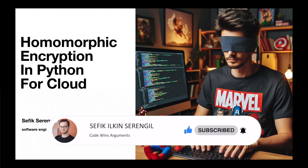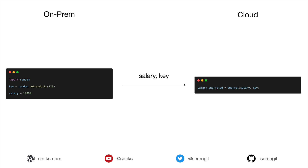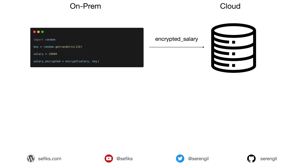Suppose that you need to store some sensitive data such as salary information to the database in cloud. Normally, suppose that my salary is 10k. I can send my salary to the cloud environment with a key — in that way I'm able to encrypt this salary information with a symmetric key encryption algorithm. But in this design, my key can be stolen because I am sending it to the cloud environment as plaintext. Alternatively, I can encrypt my salary information on-prem, so I'm not sending my private key to the cloud environment, just sending the encrypted salary. This is very secure.